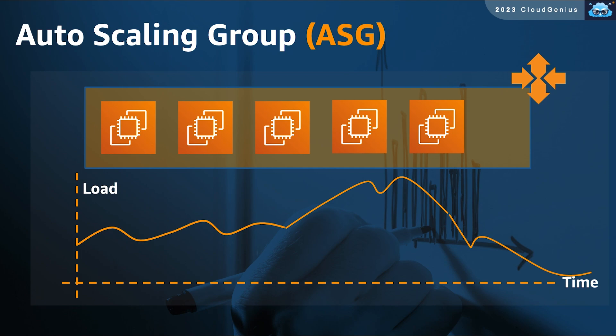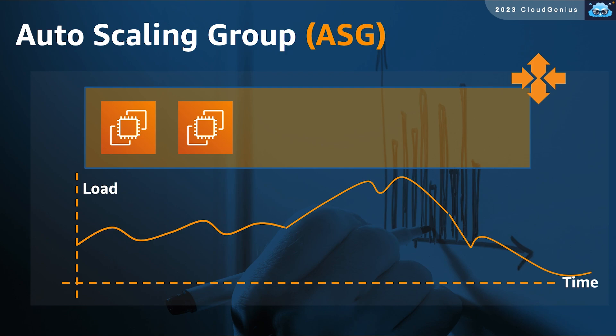My combined computing power is now much more than what I need. The new challenge? Cost control. It is a bad practice for idle resources to appear on your cloud bill — you have to reduce waste, stop idle resources, and stop paying for them. And here ASG comes to the rescue again. Just as it helped us scale out, ASG can also start removing extra resources and decommissioning any extra instances you no longer need.